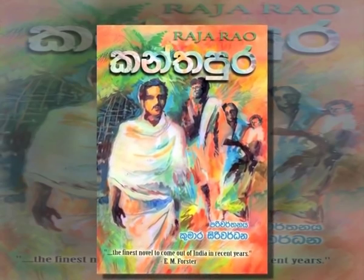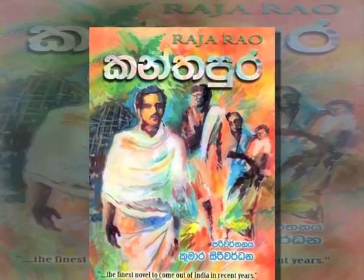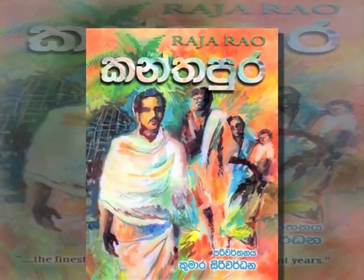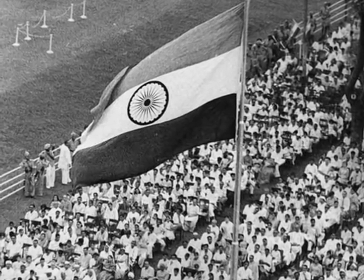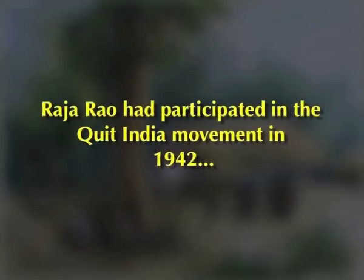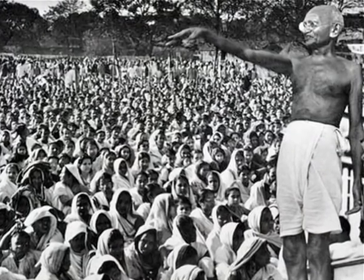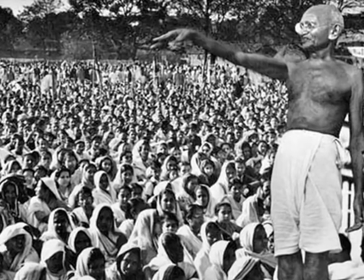Kanthapura, 1938, is the novel with which Raja Rao made his debut and is considered by many to be his magnum opus. It is a portrayal of the Gandhian struggle for the freedom of the country. It is vivid and realistic despite being written in France, thousands of miles away from India. Raja Rao participated in the Quit India Movement in 1942 and had witnessed the influence of Gandhi firsthand. He used this experience to depict the impact of Gandhi in the villages of India.